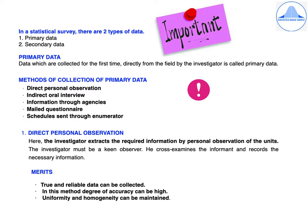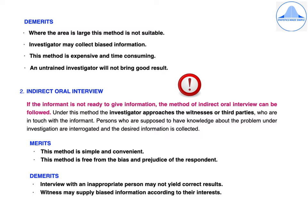In direct personal observation, the investigator extracts the required information by personal observation of the units. The investigator must be a keen observer, cross-examine informants, and record the necessary information. Merits: true and reliable data can be collected, degree of accuracy can be high, and uniformity and homogeneity can be maintained. Demerits: not suitable when the area is large, the investigator may collect biased information, it is expensive and time consuming, and an untrained investigator will not bring good results.